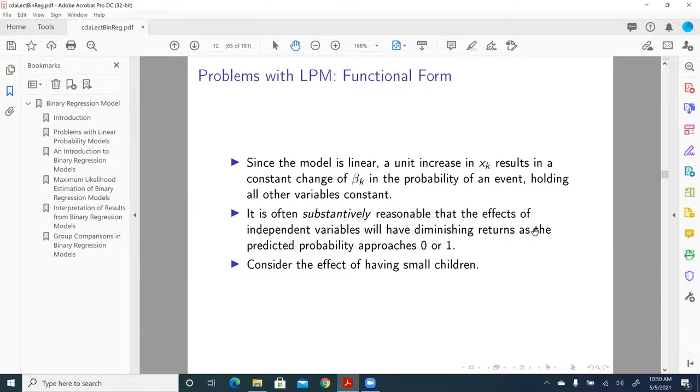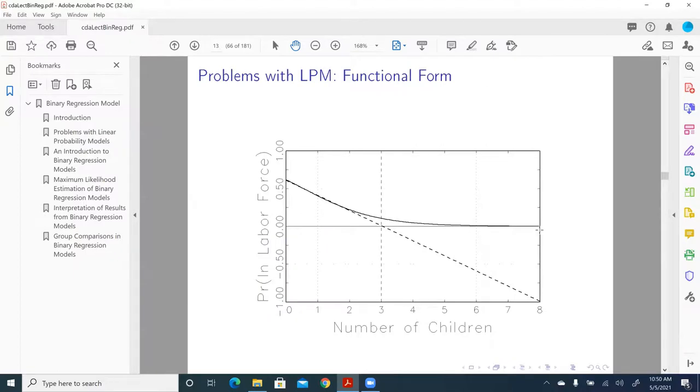For example, let's consider the effect of having smaller children. Here we have two variables: number of children as predictor and the probability of labor force participation. As we increase the number of children for females, their probability to participate in the labor force decreases. That's a pretty reasonable prediction. But as we increase the number of children from 3 to 4 to 5 to 6 to 7 to 8, there are a lot of factors that will make the relationship weaker.